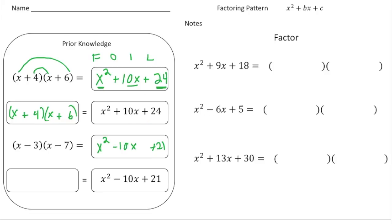Here's the key thing I need you to understand — they're not all that easy. To get the 10x in the middle, you have to say: what times what gives us the last term? So 4 times 6 gives us 24, but also adds up to the 10 in the middle. 4 times 6 gives us the 24, and 4 plus 6 gives us the 10 that we want as the coefficient of the middle term.